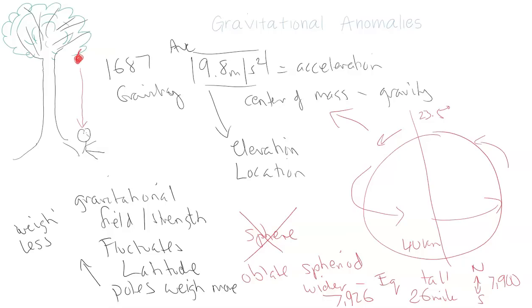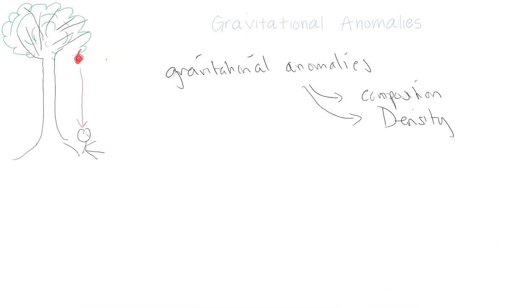You'd weigh about 5.5 ounces less if you start at 100 pounds at the north pole — you'd actually end up at 99.65 pounds in Ecuador. Small change. So gravitational anomalies are based on the composition of what's in the crust and the atmosphere. There's a general gravitational range that we expect.